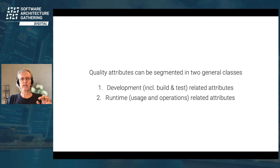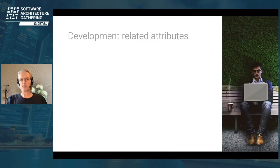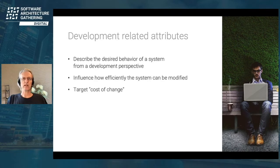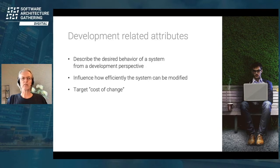Development-related attributes describe the desired behavior of a system from a development, build, and test perspective. They influence how efficiently you can modify a system — they target the cost of change basically. Maintainability, changeability, understandability of the code and system structure are examples. There's a caveat though: the effectiveness of the measures you take can usually only be measured in hindsight.